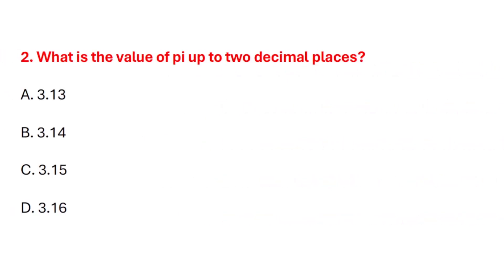Question 2. What is the value of pi up to two decimal places? Correct answer is option B: 3.14.